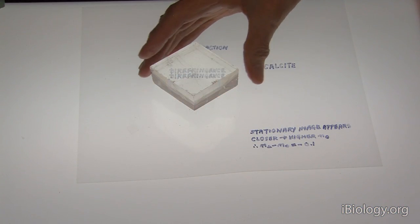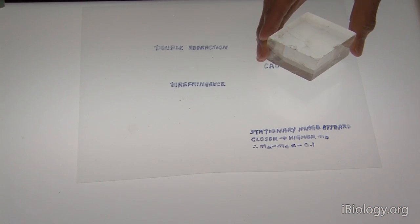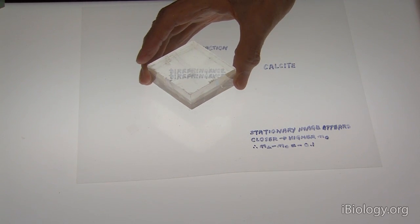Now, double refraction is the property that we use very often in biology. One of the properties of this double refraction is that the light that comes through the crystal, before just a single image, becomes double.